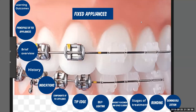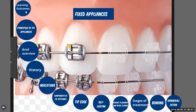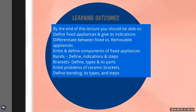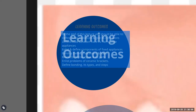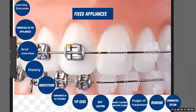The topic of today's discussion is fixed orthodontics. The learning objectives are: what is the fixed appliance and its indications, the differences between fixed and removable appliances, the different components of the fixed appliance, and the problems of ceramic braces and some debonding techniques.